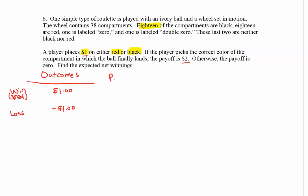Now the probability of the outcomes: the probability of winning is if the ball lands in a red slot, and there are 18 reds out of 38 slots. The probability of losing has the same denominator of 38, and we want to make sure the numerators total up to 38. So we take 38 minus 18, which gives us 20 remaining spots that are not red.